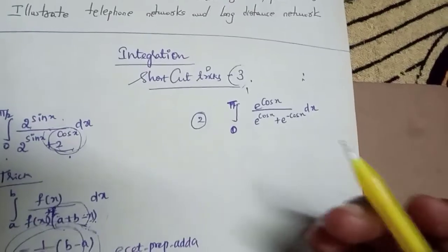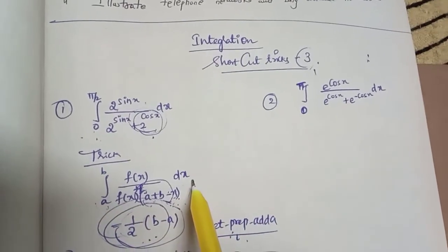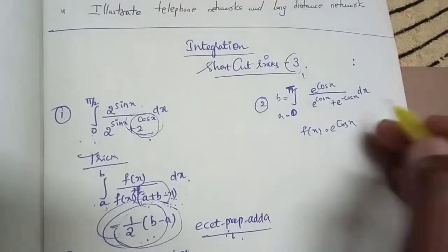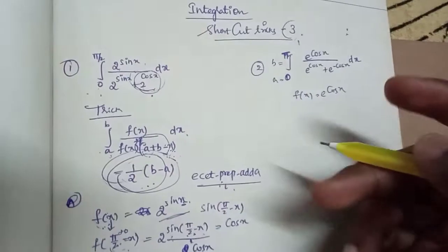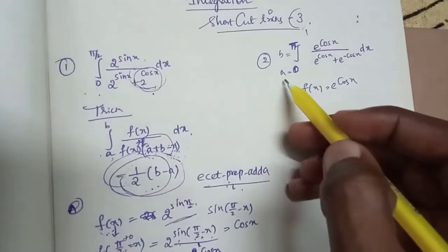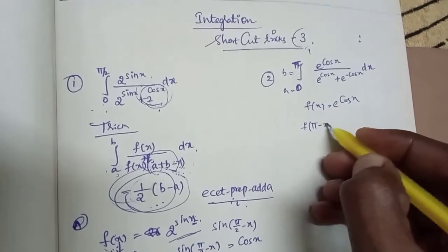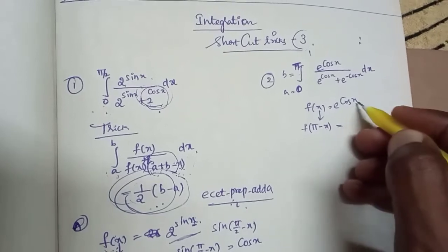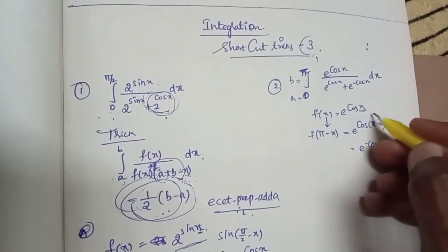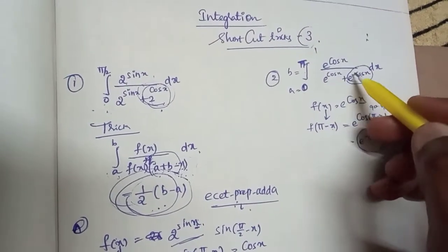Next problem: from 0 to pi, same form using the formula integral from a to b of f of a plus b minus x dx. Here a is equal to 0, b is equal to pi. f of x is equal to e power of cos x. So f of pi minus x: cos of pi minus x is equal to minus cos x, so f of pi minus x is e power of minus cos x.